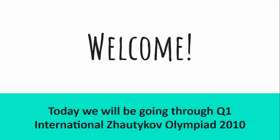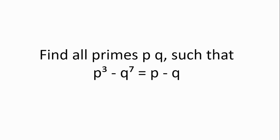Welcome! Today we'll be going through question 1 from the International Mathematical Olympiad 2010. Find all primes p and q such that p³ - q⁷ = p - q.